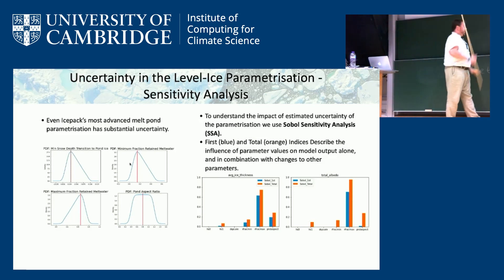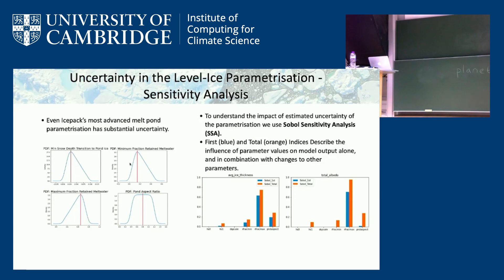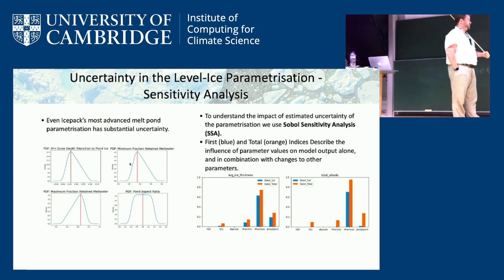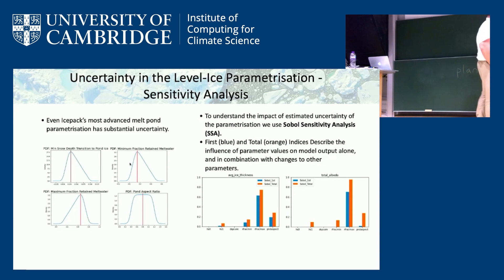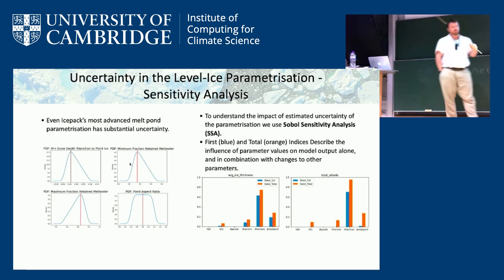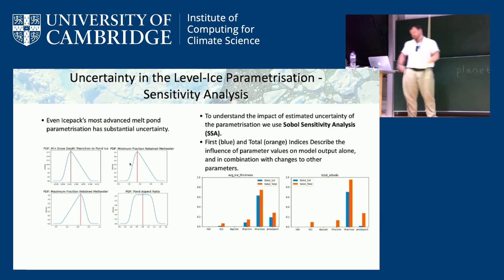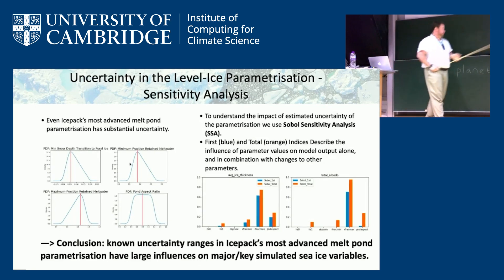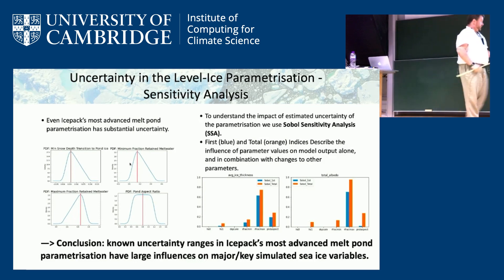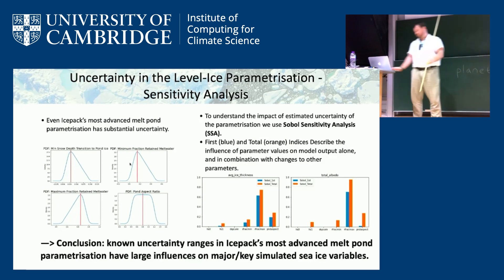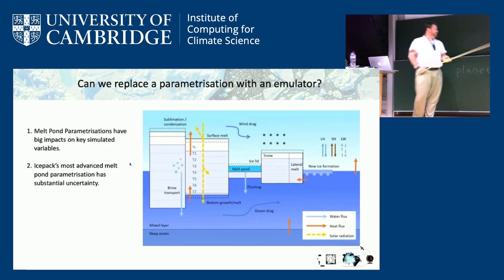The total Sobol indices (orange bars) show how parameters affect outputs not only on their own but also through interactions with other parameters. The maximum fraction of melt water retained on the sea ice surface plays a role in, for example, average ice thickness. Melt ponds forming earlier in the melt season have greater influence on average ice thickness than those forming later. The key takeaway is that uncertainty ranges in ice parameters within melt pond parameterization have large impacts on major simulated sea ice variables.